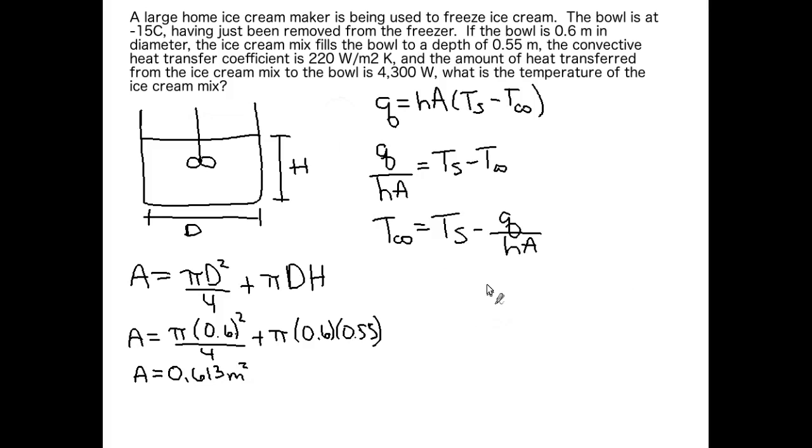Before we start plugging in our numbers for T infinity, I want to make a point about q. If we are freezing this ice cream, we know that T infinity (the bulk temperature of our ice cream) is going to be greater than Ts (the bowl used to freeze the ice cream mix). And we know that because we are trying to freeze this ice cream mix. So h is always positive and A is always positive. So if we have a greater T infinity than Ts, q is going to come out negative.